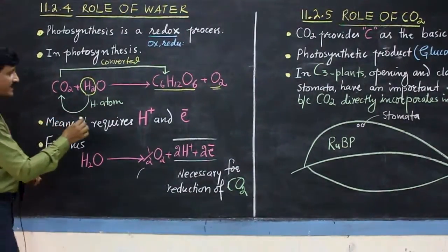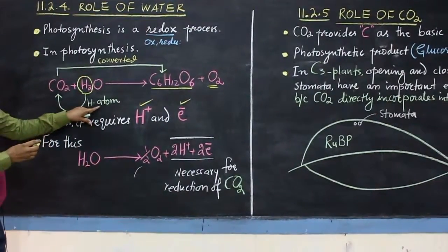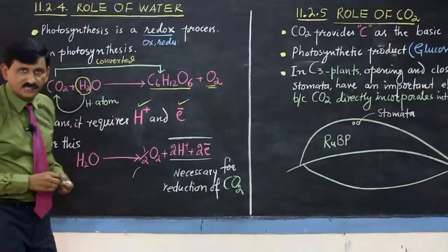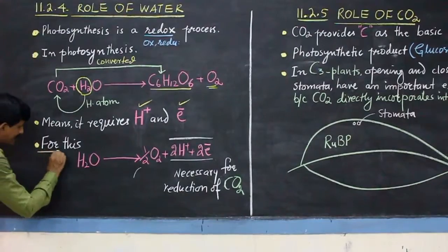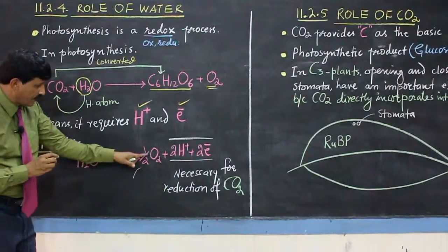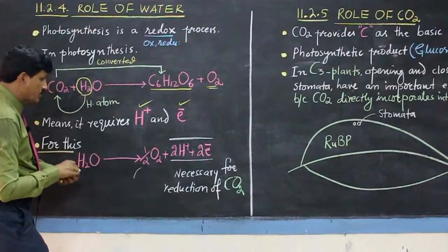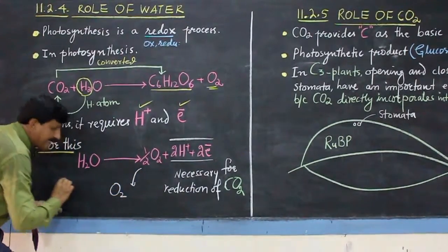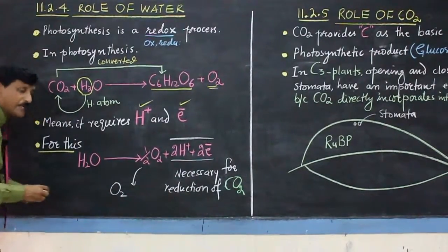Photosynthesis requires hydrogen ions and electrons. To meet this requirement, water breaks up into half a molecule of oxygen, plus two hydrogen ions and two electrons.